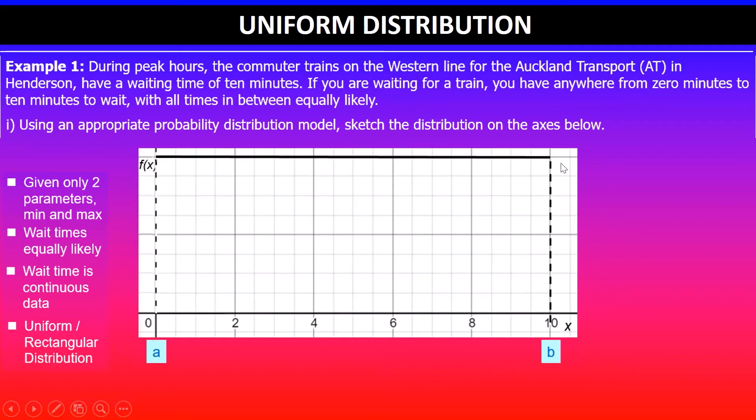Once I've got this, I'll also need the value of the height for this graph. It's very easy - we know that the total area will be one, and using the formula for area of a rectangle which is base times height, I know the base is given by b minus a. So substituting in the formula: area is one, one equals b minus a times height.